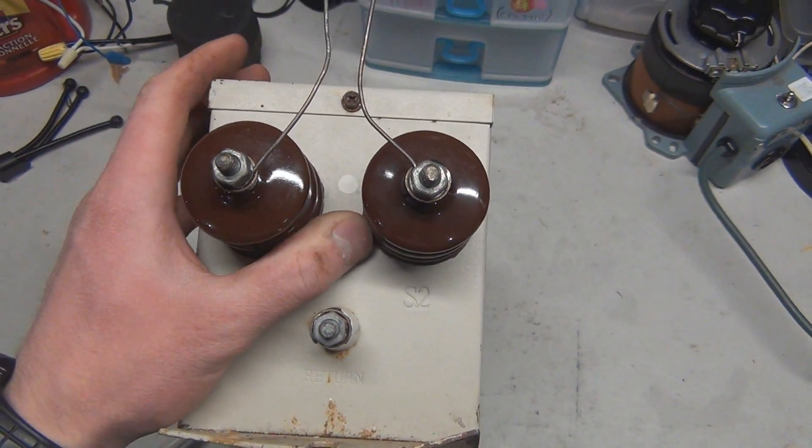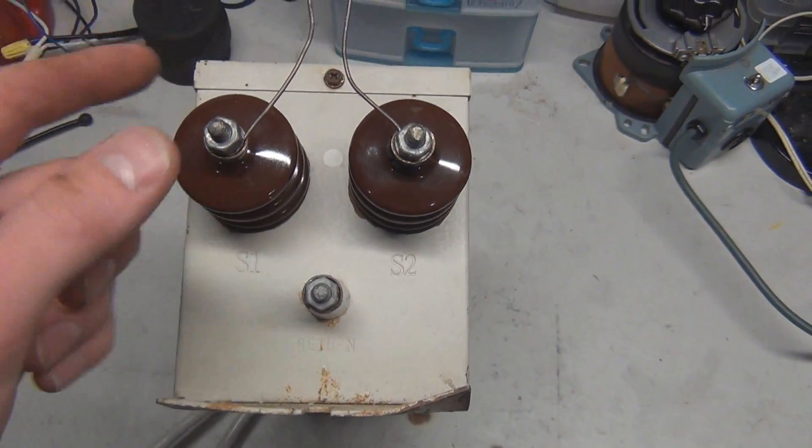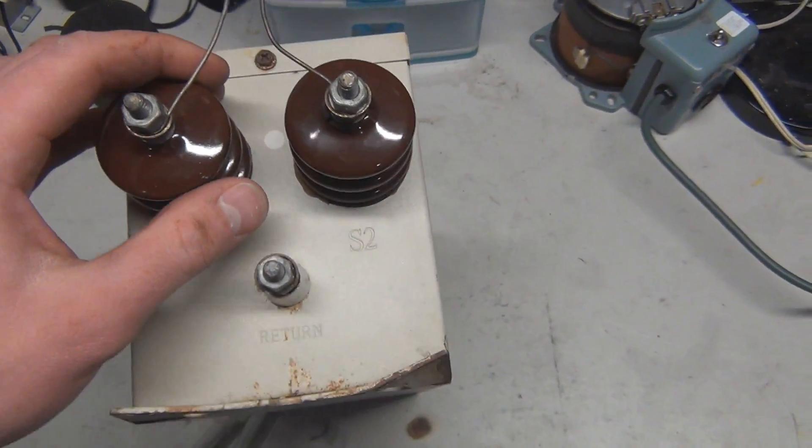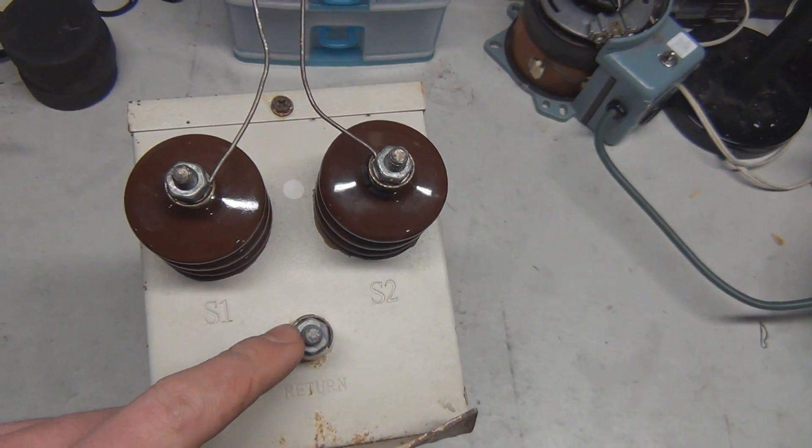So basically these things are set up like any typical high voltage transformer. You have your one end of the transformer and then your other edge here, and then the center, it's got a center point ground.